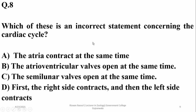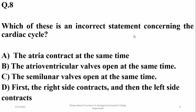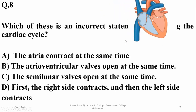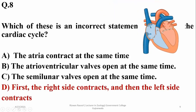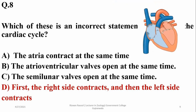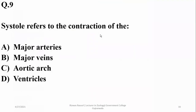During the cardiac cycle, atria contract at the same time, and ventricular valves — bicuspid and tricuspid — open and close at the same time. Semilunar valves also open and close simultaneously. However, right and left sides do not contract at the same time; upper and lower chambers contract simultaneously. The incorrect statement is that the right side contracts first and then the left side — that is wrong.